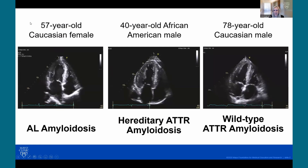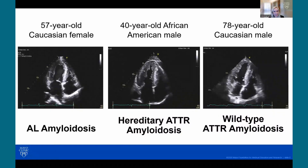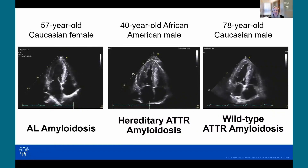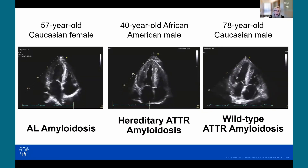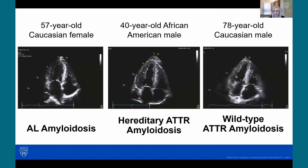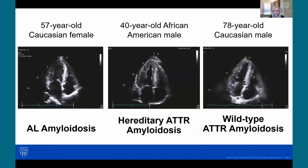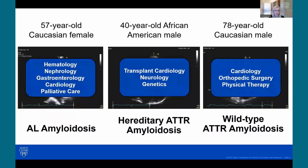We all know that it takes a village to take care of amyloid patients. I was recently reflecting on an amyloid clinic day I had. I saw a 57-year-old white female with AL amyloid, a 40-year-old African-American male with hereditary TTR amyloid, and a 78-year-old white male with wild-type TTR amyloid. I thought about all of the different providers that these patients were also seeing — multiple subspecialists.